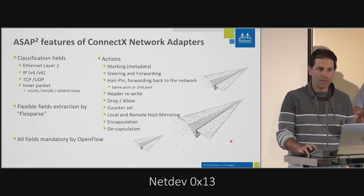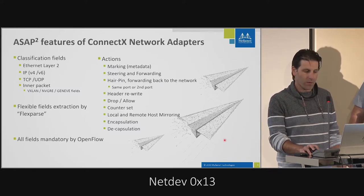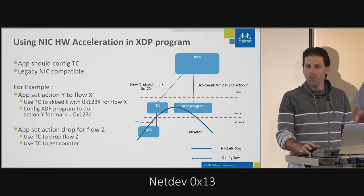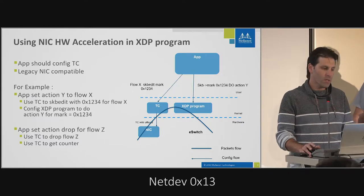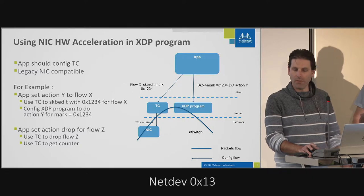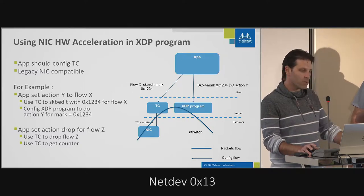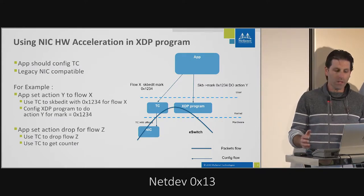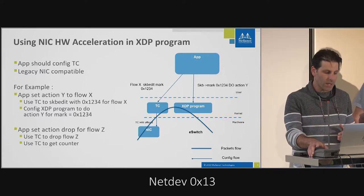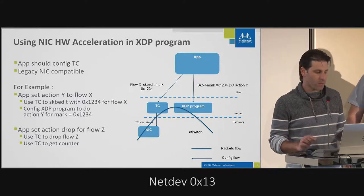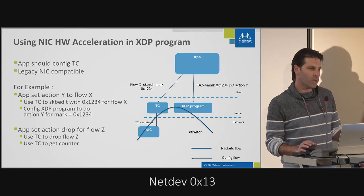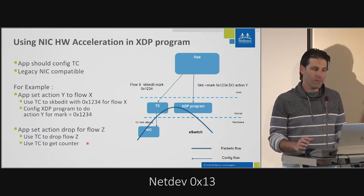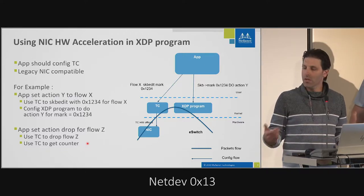Modern NICs can do those things, so let's use them to accelerate software. For XDP, we can use TC to insert rules into the hardware, and it should work also with legacy NICs that do not have hardware acceleration support. One example is marking — you can use TC to do marking on the SKB with SKB edit, mark a flow with a certain tag, and then choose any action for that marking. Another example is dropping: instead of going to software and dropping there, you can decide that a specific flow is going to be dropped in hardware.